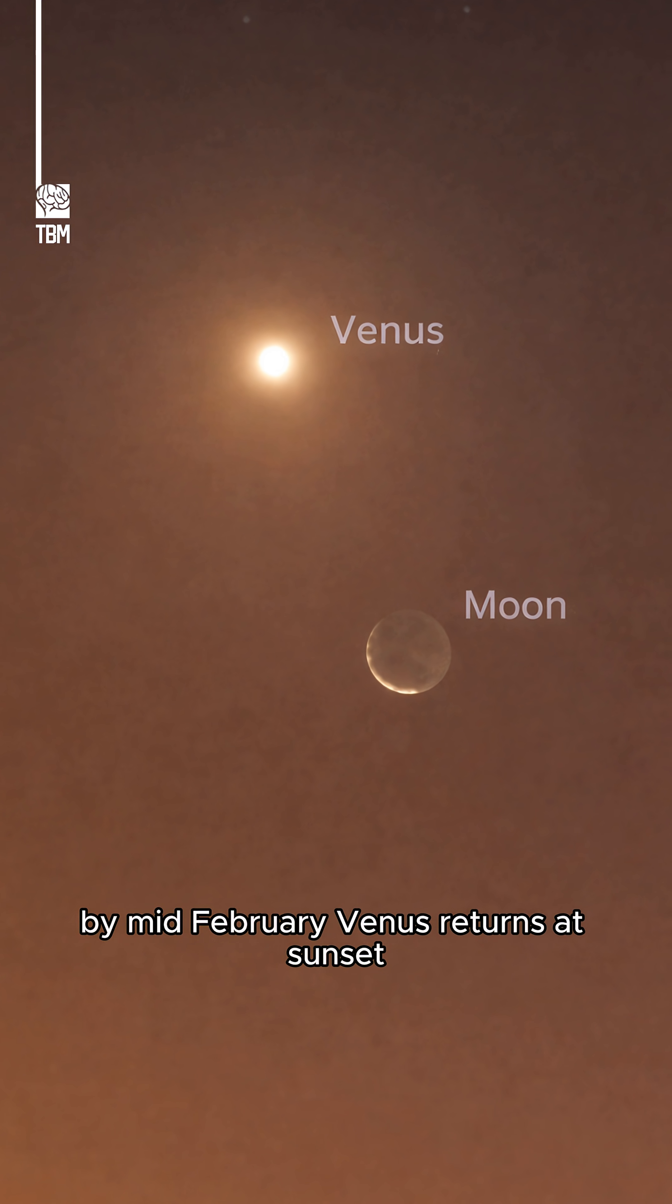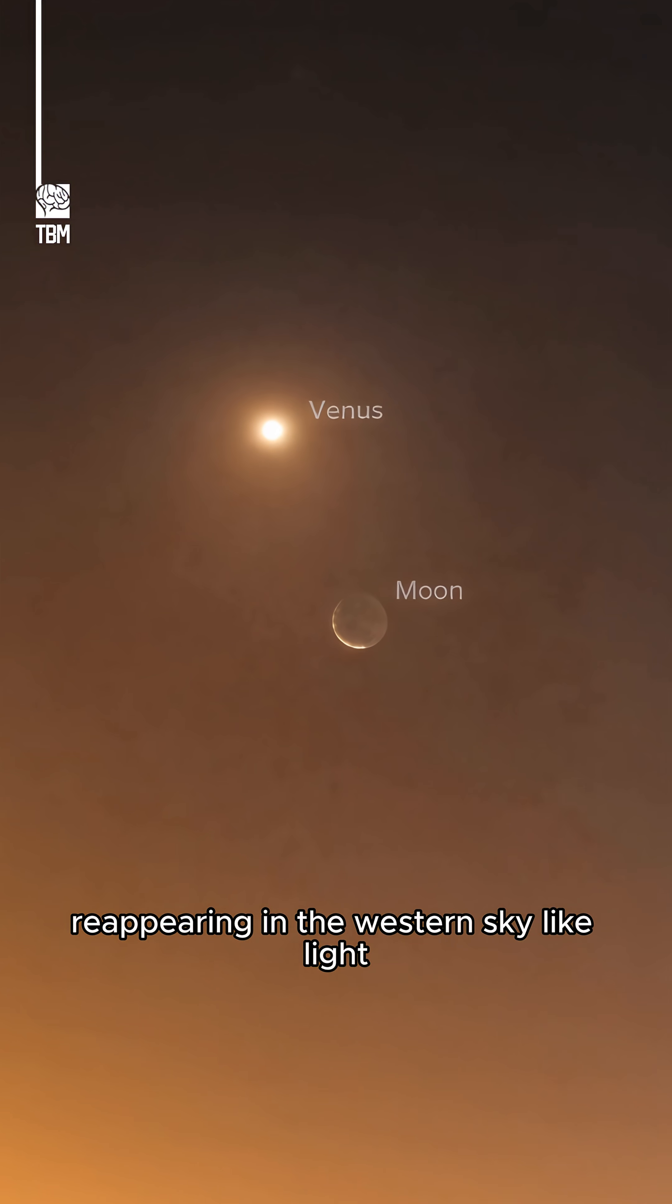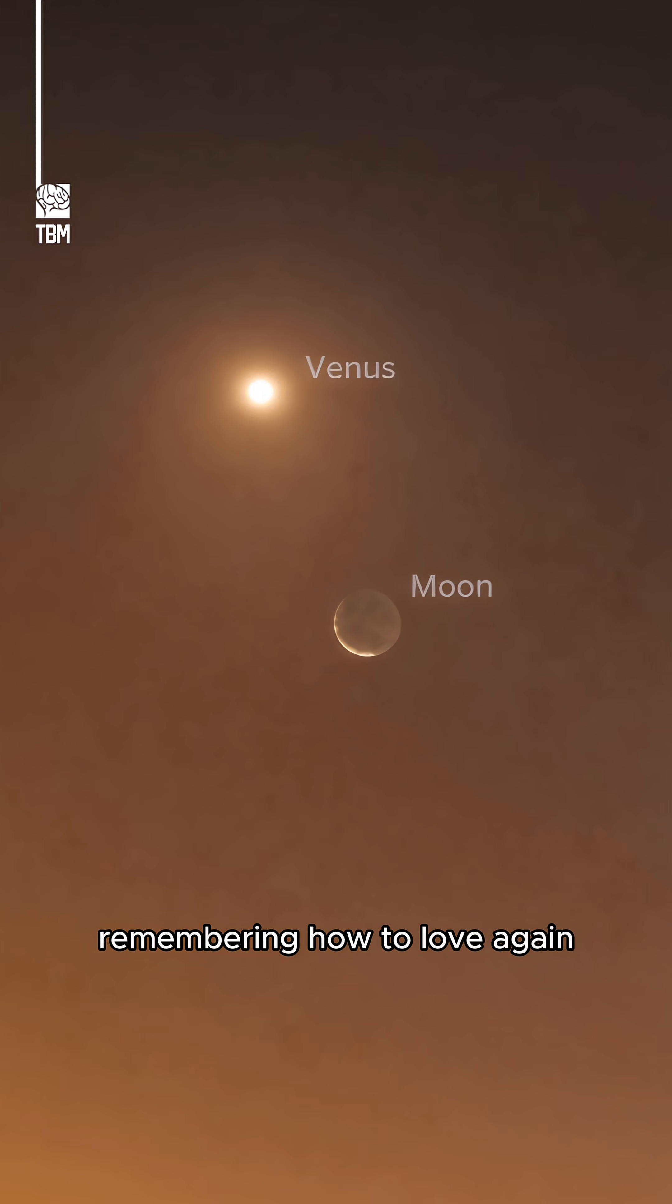By mid-February, Venus returns at sunset, reappearing in the western sky like light, remembering how to love again.